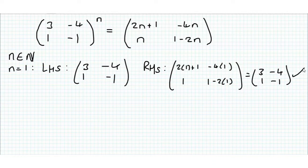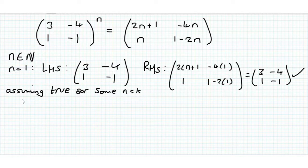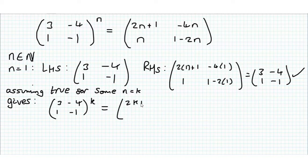Now we want to prove that if it's true for n equals k, that implies it's true for n equals k+1. So assuming true for some n equals k gives us (3, -4; 1, -1) to the power of k is equal to (2k+1, -4k; k, 1-2k). So what we want to do is use this result to show the result for k+1.